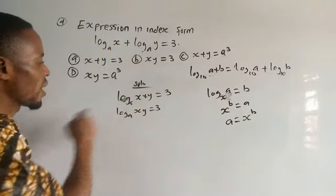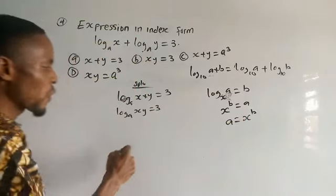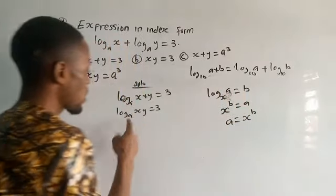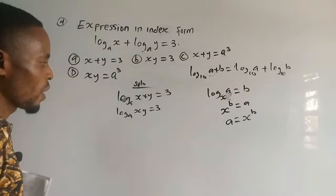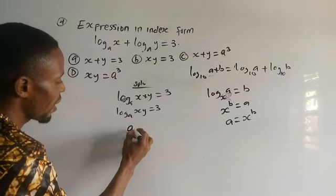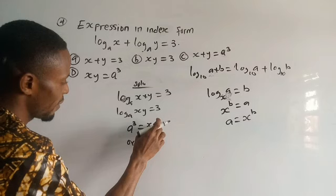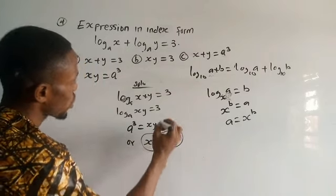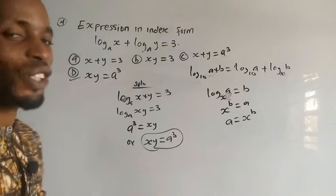This expression is the same as the one I described, according to the law of logarithms. Here, xy represents a, the 3 represents b, and 8 represents the base. So applying the rule: 8 raised to the power of 3 equals xy, or xy equals 8 raised to the power 3. So the answer to this question is option D. That is the solution to this question.